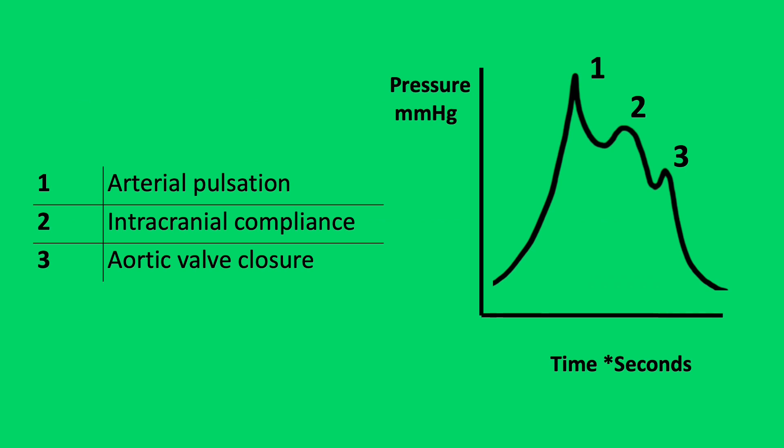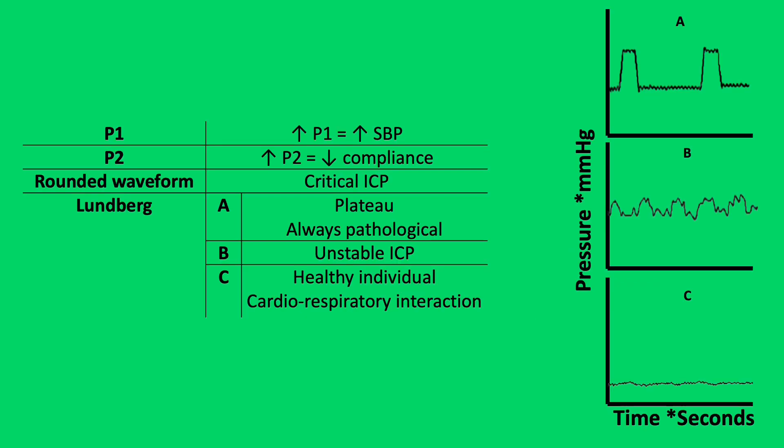The ICP waveform shows pressure on the y-axis and time on the x-axis. There are three peaks: P1 is the arterial pulsation, P2 represents intracranial compliance, and P3 is aortic valve closure. Changes in ICP pressure waves can suggest underlying pathology. An increase in P1 suggests increased systolic blood pressure, an increase in P2 suggests reduced cerebral compliance, and rounding of the whole wave can suggest critical ICP.